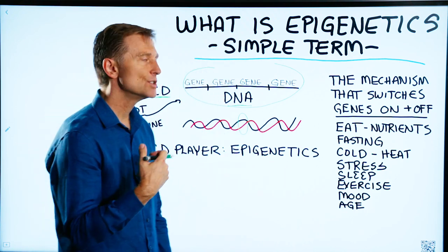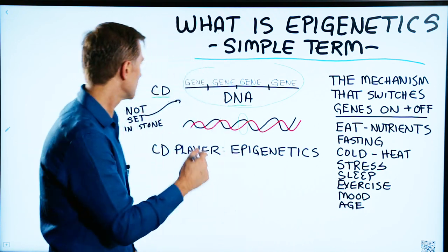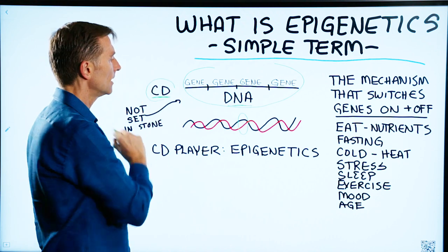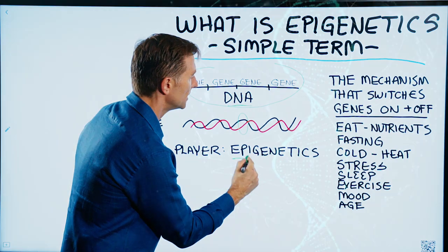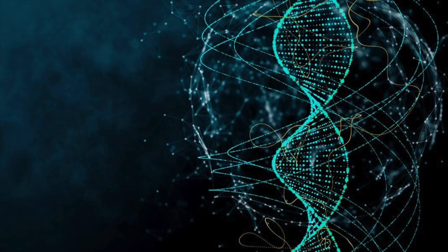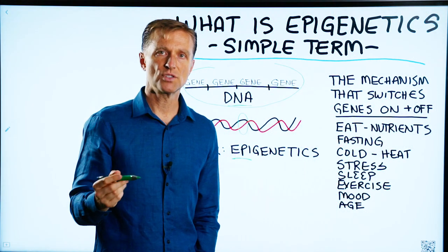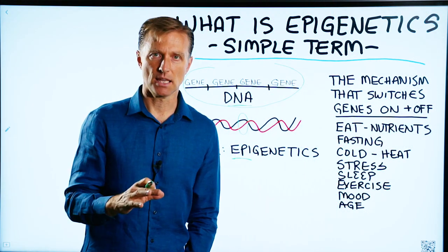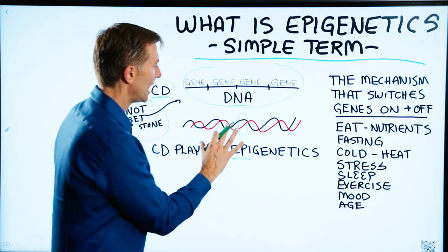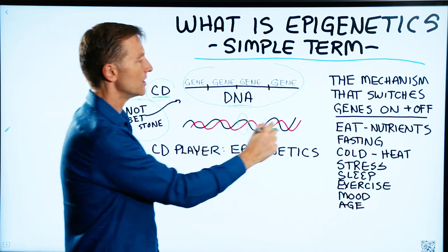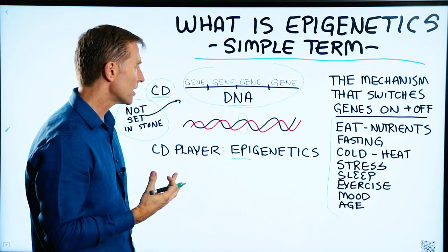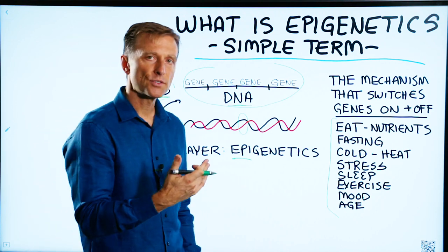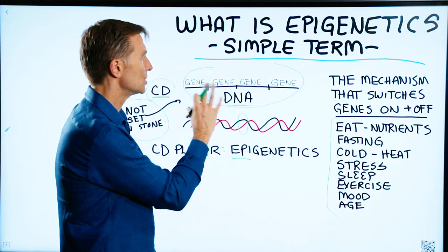But you need someone to do something with that music — you need someone to play the CD. That's epigenetics. Epigenetics means 'above genetics.' The DNA or gene is not set in stone, so just because you have certain genetics doesn't mean anything. It's really the epigenetics — it's really your environment. The environment is what triggers turning on or turning off these genes.